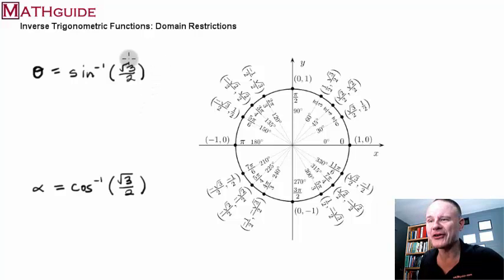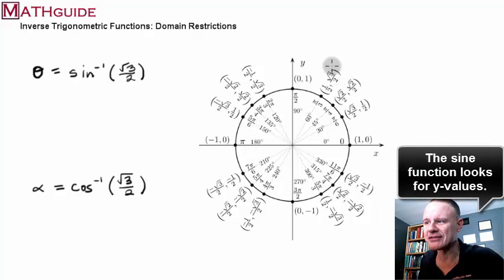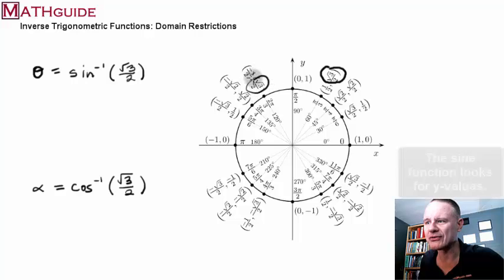Imagine a problem where you're trying to figure out the inverse sine of square root of three over two. If you're using a unit circle, you know that when you're dealing with sine, you deal with the y values. So here's a y value, square root of three over two. Here's another y value, square root of three over two. Are there two answers?